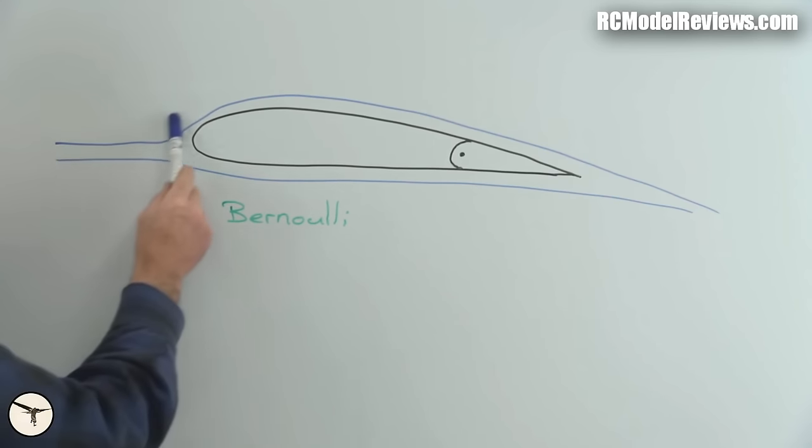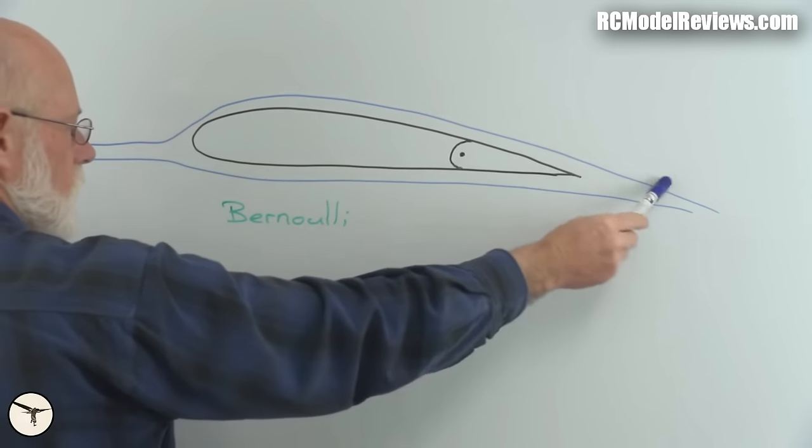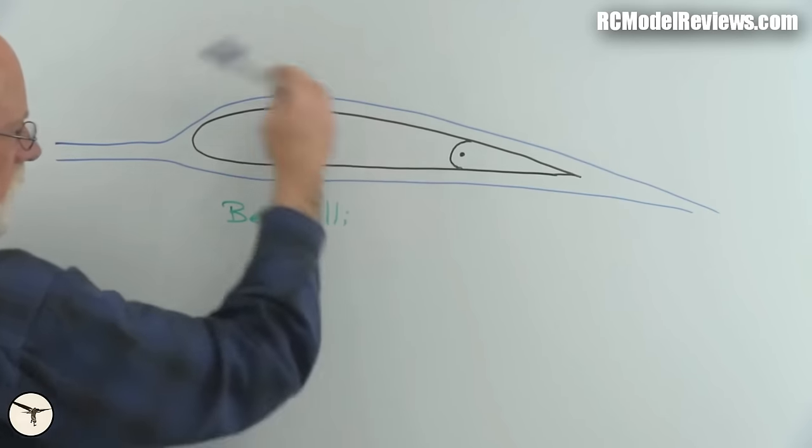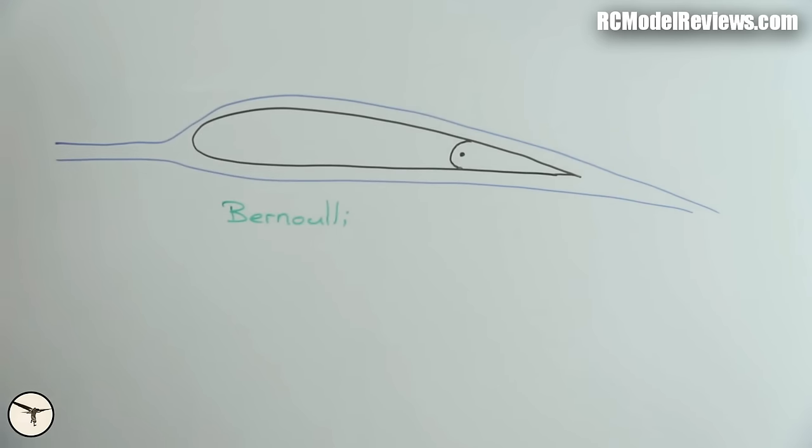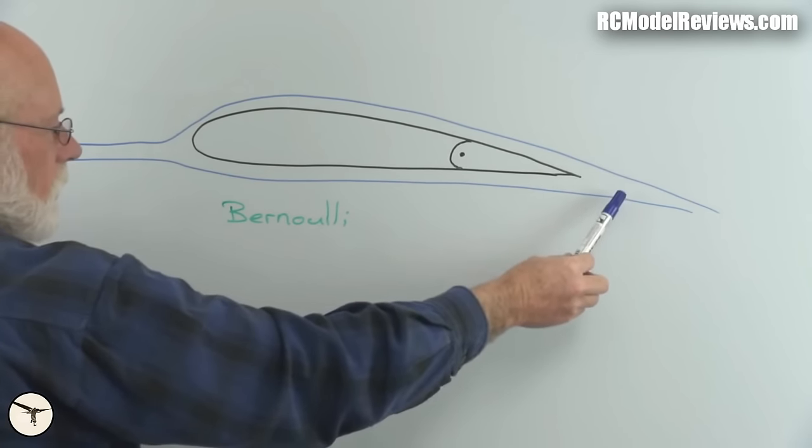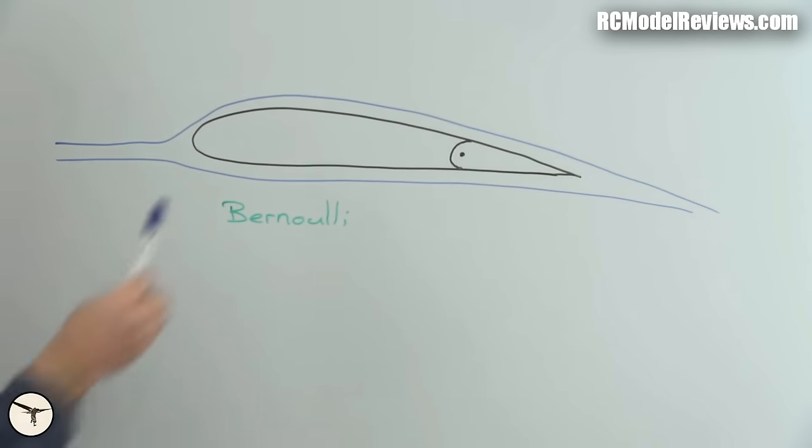Obviously, the air travelling over the top of this wing has further to go before it reaches the back than the air travelling underneath. This line is longer because it's got a big bend in it. And so, if we assume that the air at the back and the air on the top and the bottom reach the back at the same time, then this must travel faster. Therefore, the pressure on top is lower.